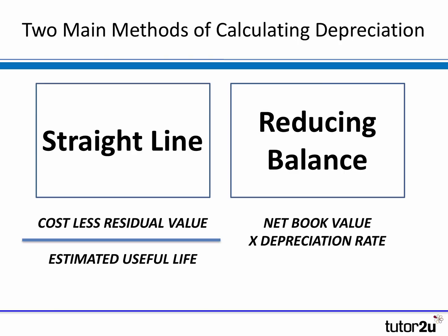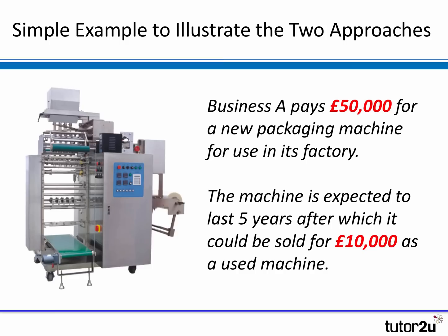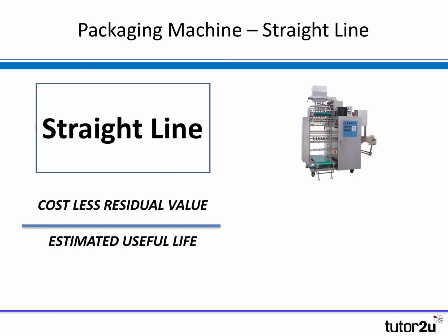Let's use the same example for both methods to show them in action. A business has bought a new packaging machine for fifty thousand pounds and they expect it to last five years, after which they think it will be worth ten thousand pounds as a used machine to sell to another buyer. So the original cost is fifty thousand pounds, it will last five years, and the reducing balance method would probably apply a twenty percent depreciation rate, while the straight-line method needs to account for the ten-thousand-pound residual value.